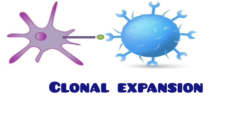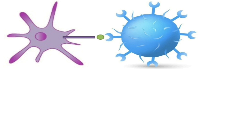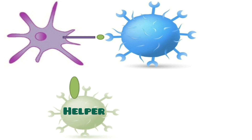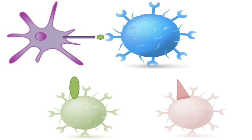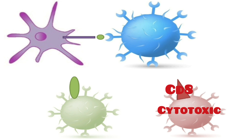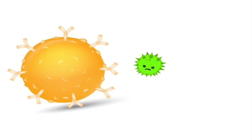Once T cells identify the presented antigen, clonal expansion happens — T cells divide many times, producing a large number of T cells. They then differentiate into T helper cells, which carry the CD4 marker on their surface and help activate all immune cells, and T cytotoxic cells, which carry the CD8 marker and kill virus-infected and cancer cells.